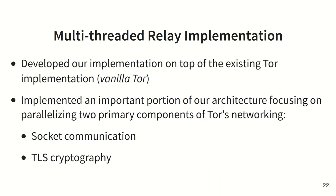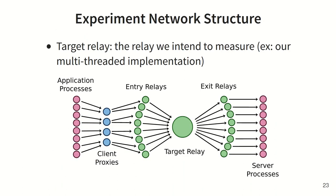To investigate the performance of our multi-threaded design, we developed an implementation as a modified version of Tor's existing codebase. We didn't implement the entire architecture, but rather parallelized only two primary components: the socket communication and the TLS processing. Our experiments were designed to evaluate our multi-threaded relay by measuring the throughput of the relay while under heavy CPU load. These experiments were not designed to model real-world Tor network traffic, but rather to provide a simple model for comparing specific aspects of the relay's performance.